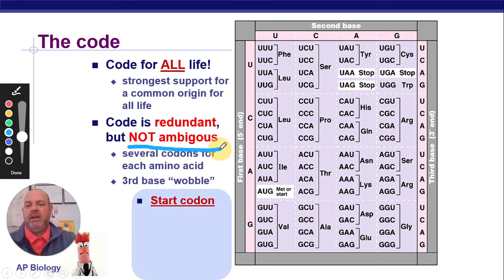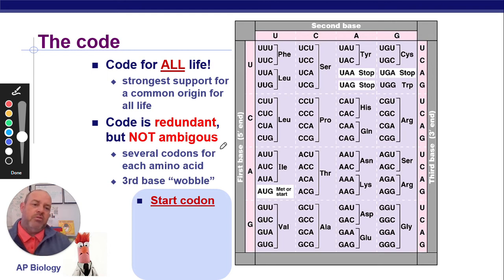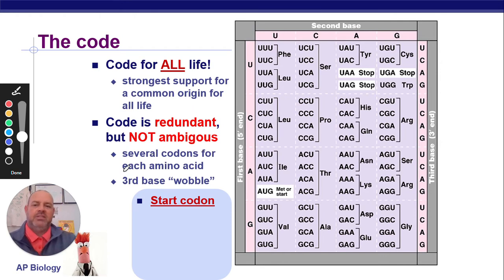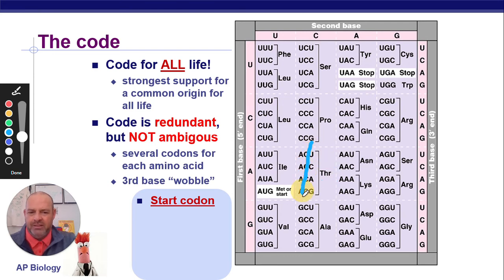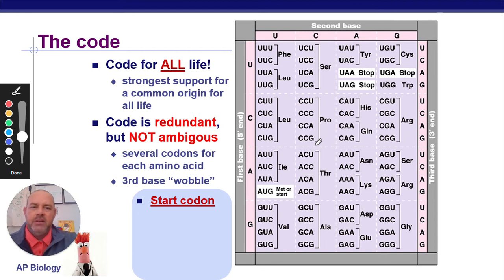The third base is called the wobble base. As long as you get AC in the first two positions, you're going to get threonine — it doesn't matter whether the third base is U, C, A, or G. That's why it's called the wobble — it's interchangeable. Redundancy varies: threonine has four codons, phenylalanine only has two (UUU and UUC), while leucine has six different codons. Generally it's two, four, or six for redundancy.